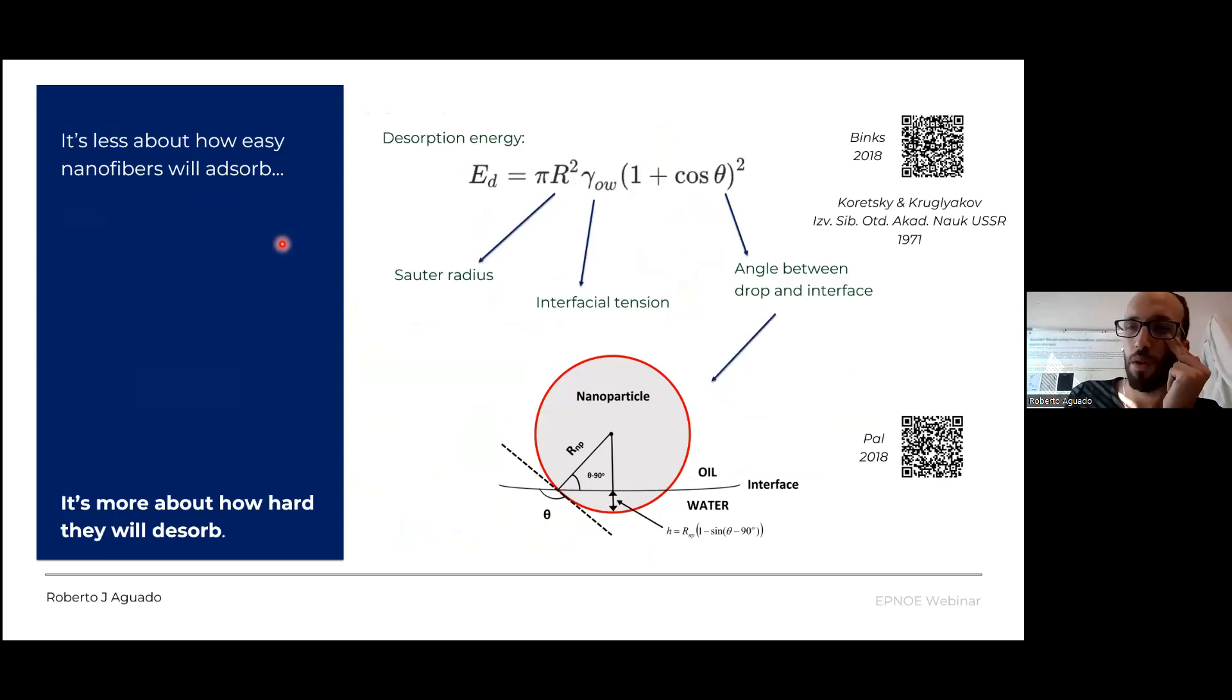This detachment equation was already shown in the presentation of Professor Capron. And yes, the detachment energy, the energy that we have to supply for detachment, is directly proportional to the interfacial tension between the oil phase and the water phase, and also to the square of the outer radius of the particle. So this is why in some emulsions we tend to have these big particles because it's the moment in which we have a favorable adsorption. So what happens when this is not met?